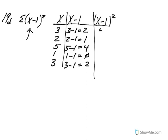So we've calculated x minus 1, and now we're just going to square those values. So that would mean 2 squared is equal to 4. 1 squared is equal to 1. 4 squared is 16. 0 squared is 0. And 2 squared is equal to 4.